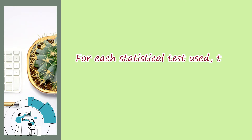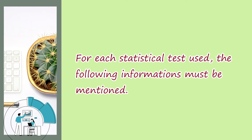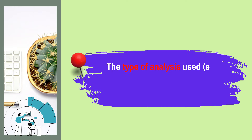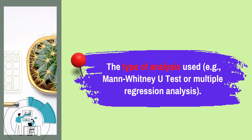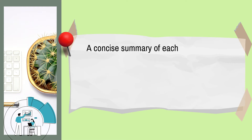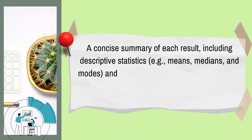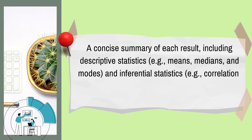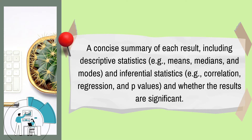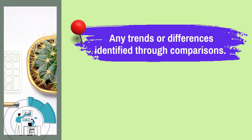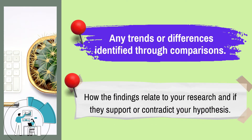For each statistical test you use, the following information must be mentioned: the type of analysis used — for example, Mann-Whitney U test or multiple regression analysis; a concise summary of its results, including descriptive statistics such as means, medians, and modes, and inferential statistics such as correlation, regression, and p-values, and whether the results are significant. It is also important to mention any trends or differences identified through comparisons, and how the findings relate to your research and if they support or contradict your hypothesis.